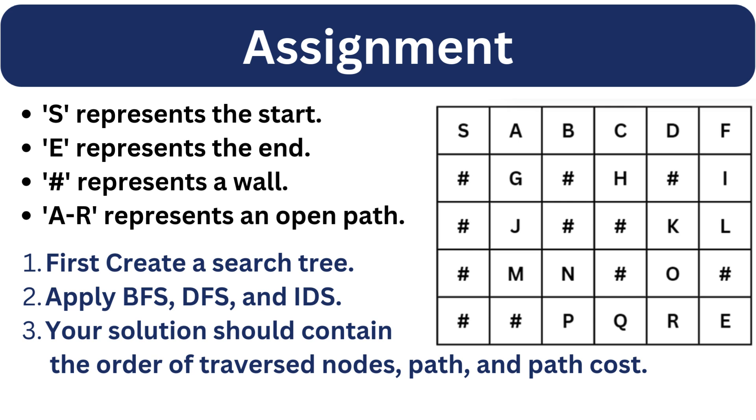Now let's talk about your assignment. Imagine you are facing a maze, it's a grid of cells, some with walls and some with open paths. Your goal is to find a path from starting point S to the ending point E. You can only move up, down, left, or right and you cannot pass through the walls. Here S represents the starting point, E represents the end or the goal. HASH represents a wall and A to R alphabets represent an open path.